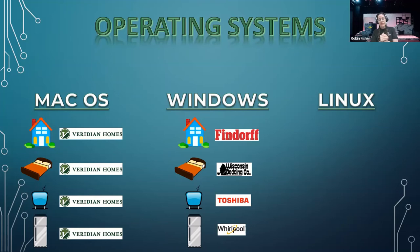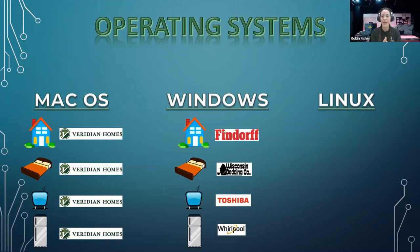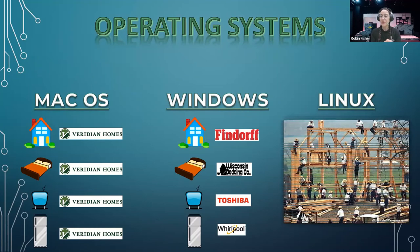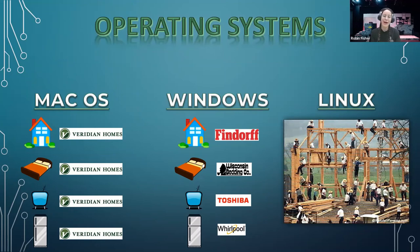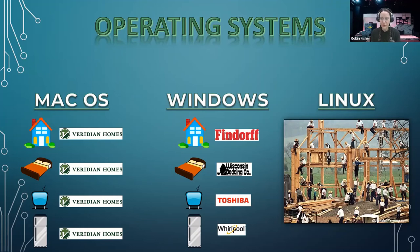Linux is an open source operating system, which means developers around the world have access to the code. They're constantly updating, creating new versions, making it kind of their own, but sharing their information. I compare Linux to an Amish barn raising, where the plans are all shared, the building is all a group project — everyone's involved, everyone knows what's going on, and you can all help each other as you go through it.